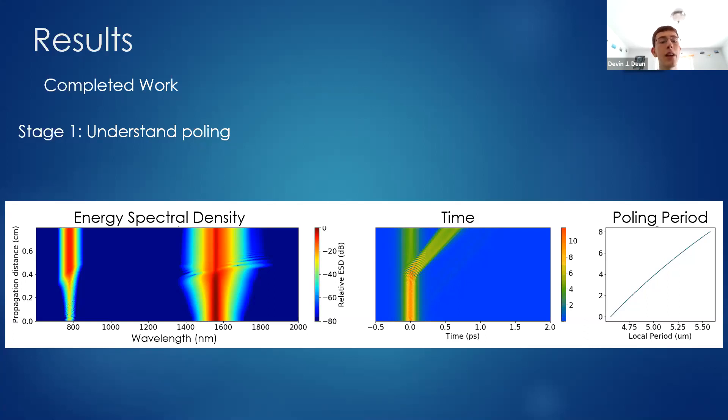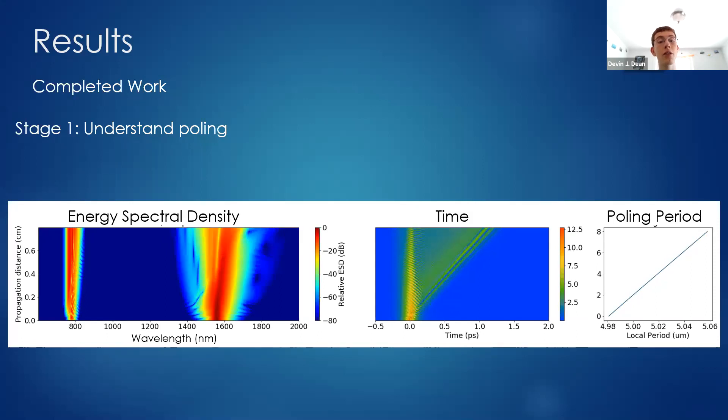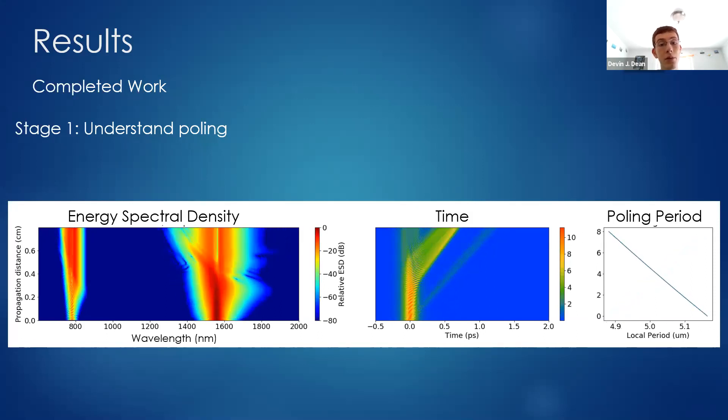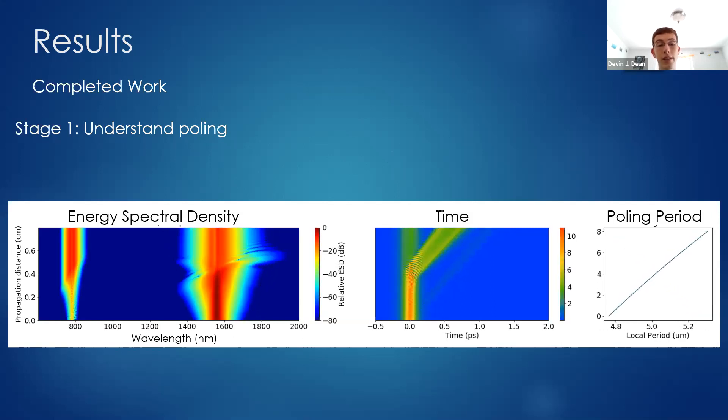This is just for one waveguide. I can do this kind of plot for many different waveguides and observe the changing outputs. You can see I'm varying the poling, and there's very different behaviors in time and as well as in energy spectral density.